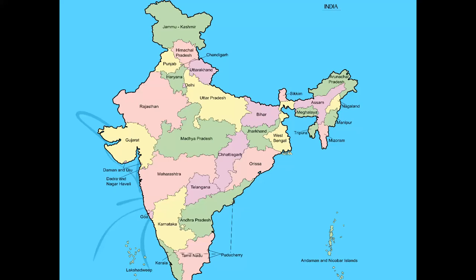India has 29 states and 7 union territories. The union territories are New Delhi, Puducherry, Daman and Diu, Dadra and Nagar Haveli, Lakshadweep, Andaman and Nicobar, and Chandigarh. India's north-south length is 3,214 km and the east-west length is 2,933 km.